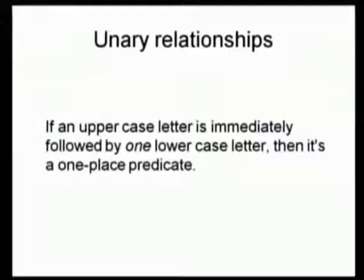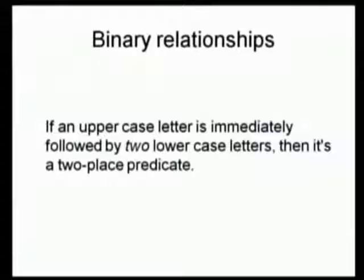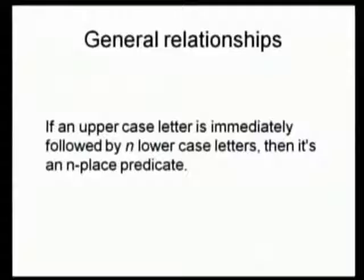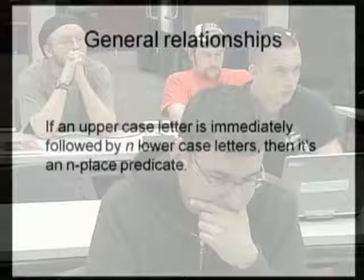For unary relationships, if an uppercase letter is immediately followed by one lowercase letter, that's a one-place predicate, and so forth. For a binary relationship, there's one followed by two lowercase letters. And in general, if an uppercase letter is immediately followed by n lowercase letters, then it's an n-place predicate.